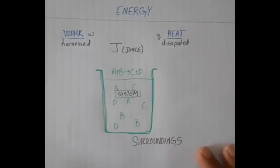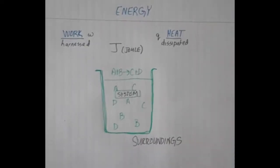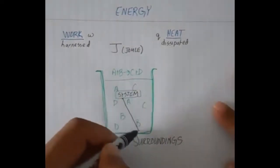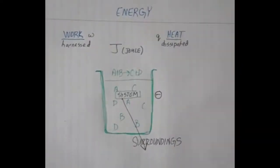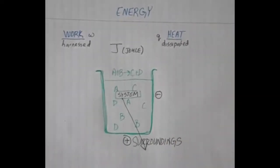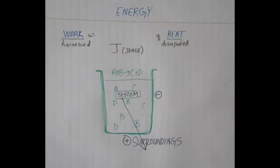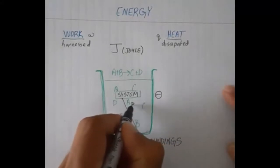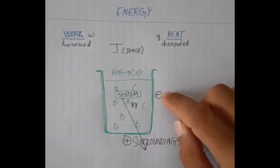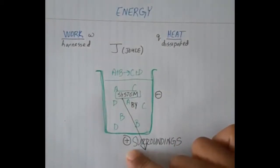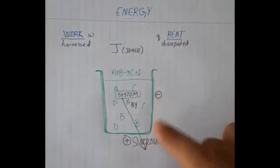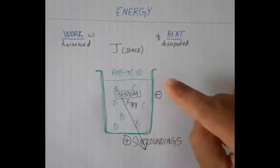An important part of this lecture is signs — positive or negative. If we have a situation where the system does work on the surroundings, the system will have a sign of negative — whatever that may be in joules. The surroundings will have an equal value but opposite in sign, due to the law of conservation of energy, which states that energy can neither be created nor destroyed. So work done by the system on the surroundings gives a negative work function for the system.